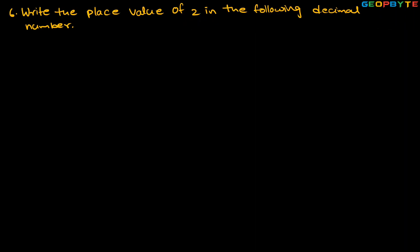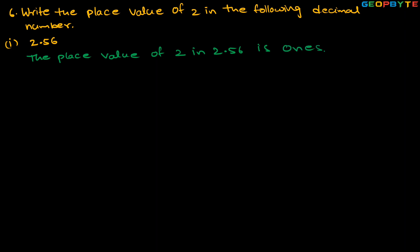Moving to the sixth question: write the place value of 2 in the following decimal numbers. The first one is 2.56. The question asks for the place value of 2. Since 2 is at the ones place, the place value of 2 in 2.56 is ones.